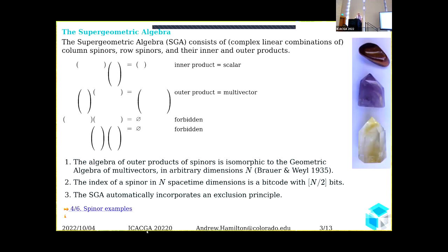What is the super geometric algebra? The super geometric algebra consists of complex linear combinations of spinors: column spinors, row spinors, and their inner and outer products. This workshop is about the geometric algebra, and it was proved by Brauer and Weyl in 1935 that the algebra of outer products of spinors is isomorphic to the geometric algebra of multivectors, and that is true in arbitrary dimensions.